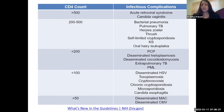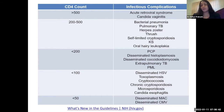When the CD4 count drops to the 200 to 500 range, you start seeing recurrent bacterial pneumonias, pulmonary tuberculosis, herpes zoster, thrush, cryptosporidiosis — which is generally self-limited at that CD4 range — Kaposi's sarcoma due to HHV-8, and oral hairy leukoplakia associated with Epstein-Barr virus.